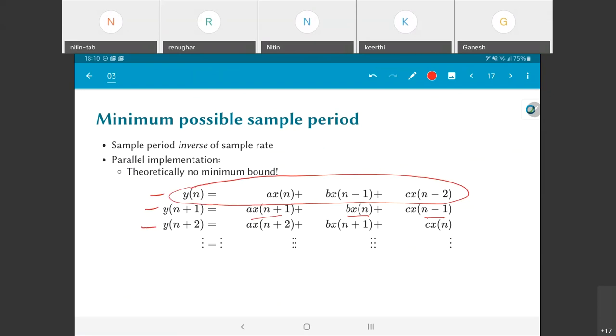Similarly y(n+2) could also have been done in parallel, and if I keep on going like this assuming that all of my inputs x(n-1) are somehow available to me, let's say they are stored in a set of registers and are made available to me somewhere, there is no theoretical lower bound on how fast I can process the samples.